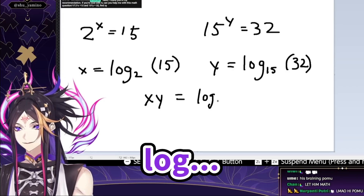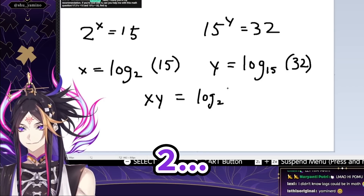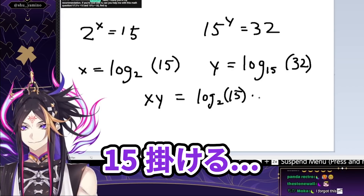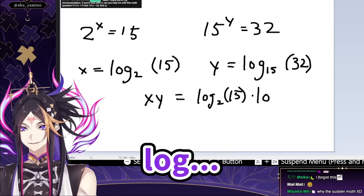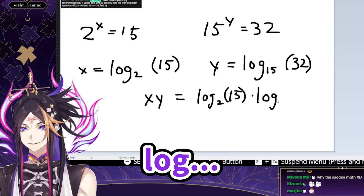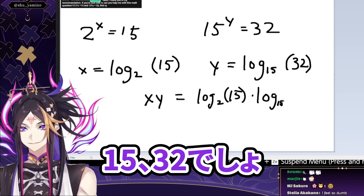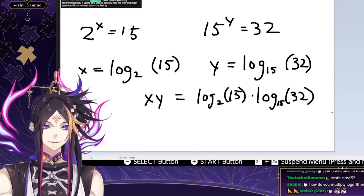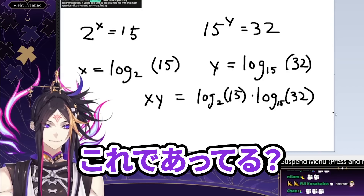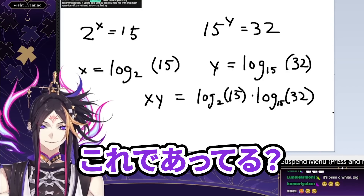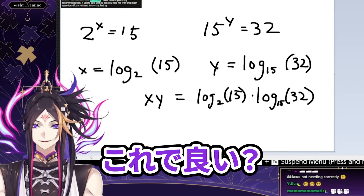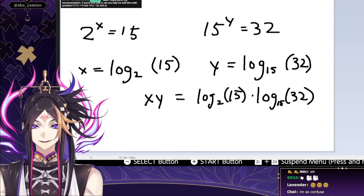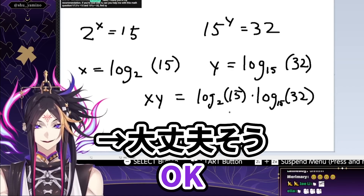So xy is just log base 2 of 15 times log base 15 of 32, right? Is this right? Am I... is that it? Looks all right.